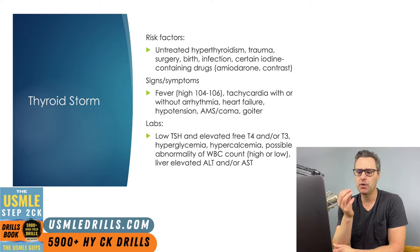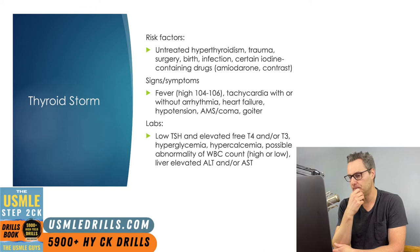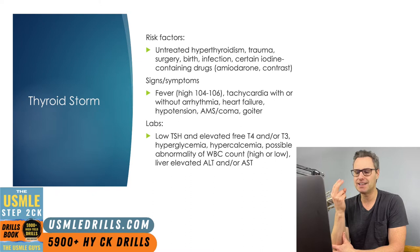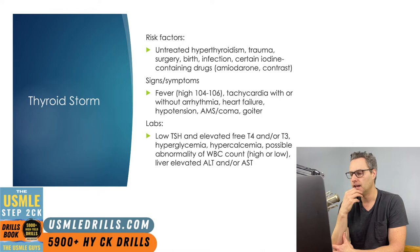When it comes to signs and symptoms, a very high fever — as high as 104 to 106 — is commonly seen. Patients will be tachycardic and may or may not have an arrhythmia. The heart can go into heart failure as a result of the rapid heart rate or arrhythmia, and you can have subsequent cardiovascular collapse with severe hypotension. Patients usually also have altered mental status and may even go into a coma. A goiter may or may not be present. Labs include low TSH, elevated free T4 and/or T3, hyperglycemia, hypercalcemia, and the white blood cell count can be high or low. You might also see elevated levels of ALT and/or AST.